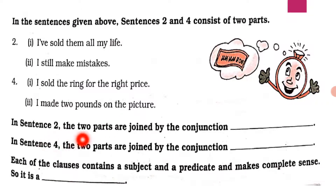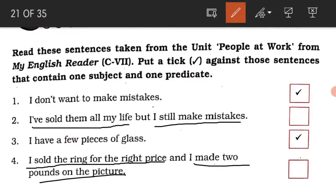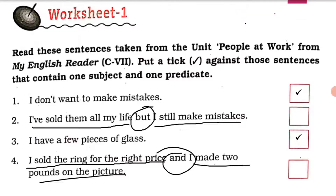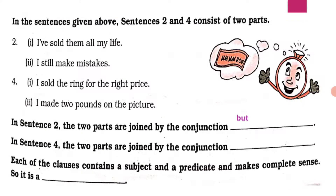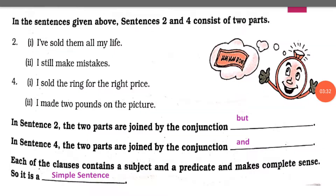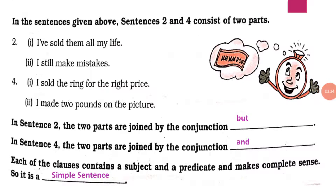In sentence two, the two parts are joined by a coordinating conjunction — the conjunction here is 'but'. In sentence four, the conjunction is 'and'. Each of the clauses contains a subject and predicate and makes complete sense. So it is called a compound sentence.